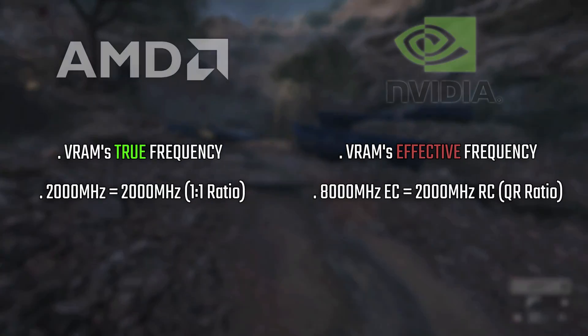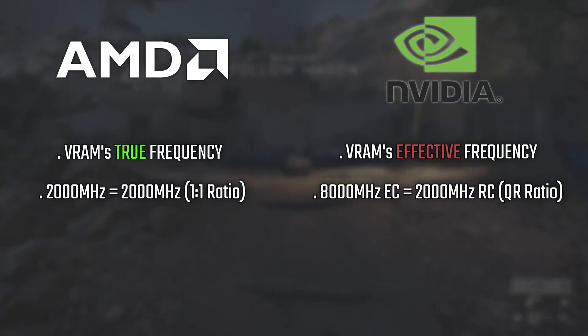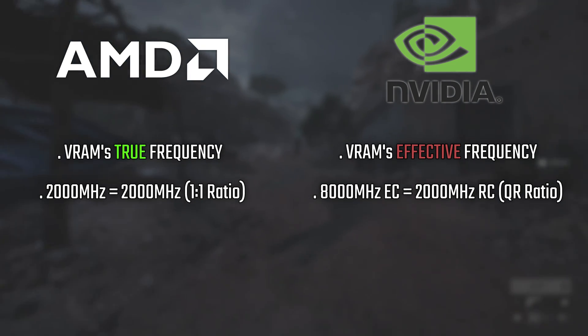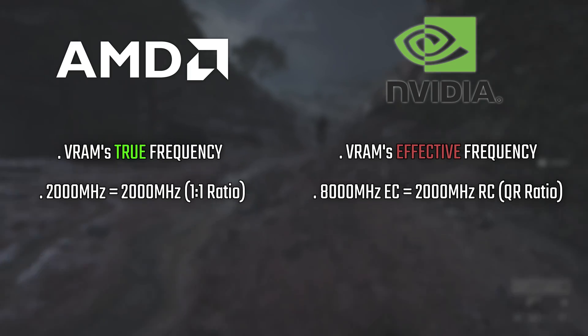It's a marketing thing — people see a high VRAM frequency and think the card must be crazy fast, but it's just marketing. So if you want to find the real frequency of an Nvidia card's VRAM — whether it's GDDR5, GDDR5X, or GDDR6 — just divide the effective clock by four. If it shows 8000, the true frequency is 2000. You have to compare both cards using the same measure: either both true frequency or both effective frequency, for a proper apples-to-apples comparison.